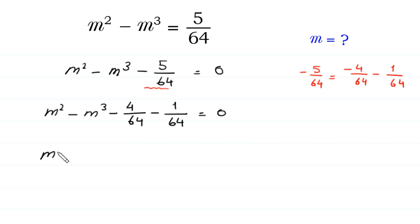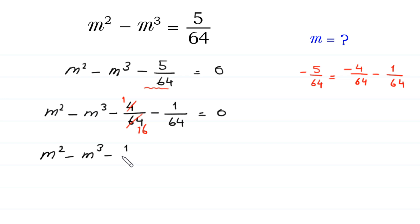Next, m squared minus m cubed. This 4 over 64 can be simplified — 4 over 64 equals 1 over 16. So we write here: negative 1 over 16 minus 1 over 64, is equal to 0.